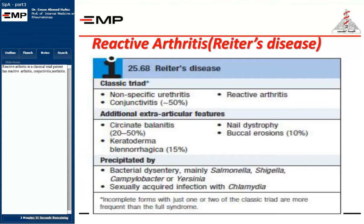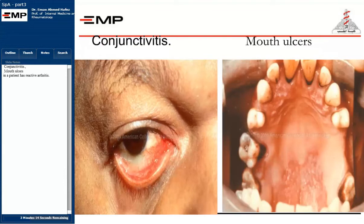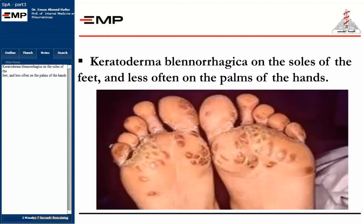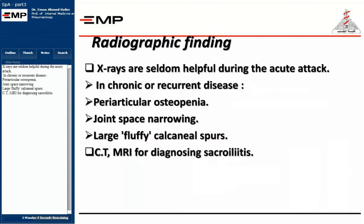Reactive arthritis presents with a classical triad of conjunctivitis, urethritis, and arthritis. Extra-articular features include mouth ulcers and keratoderma blennorrhagica on the soles of the feet and less often on the palms of the hands. X-rays are seldom helpful during the acute attack.